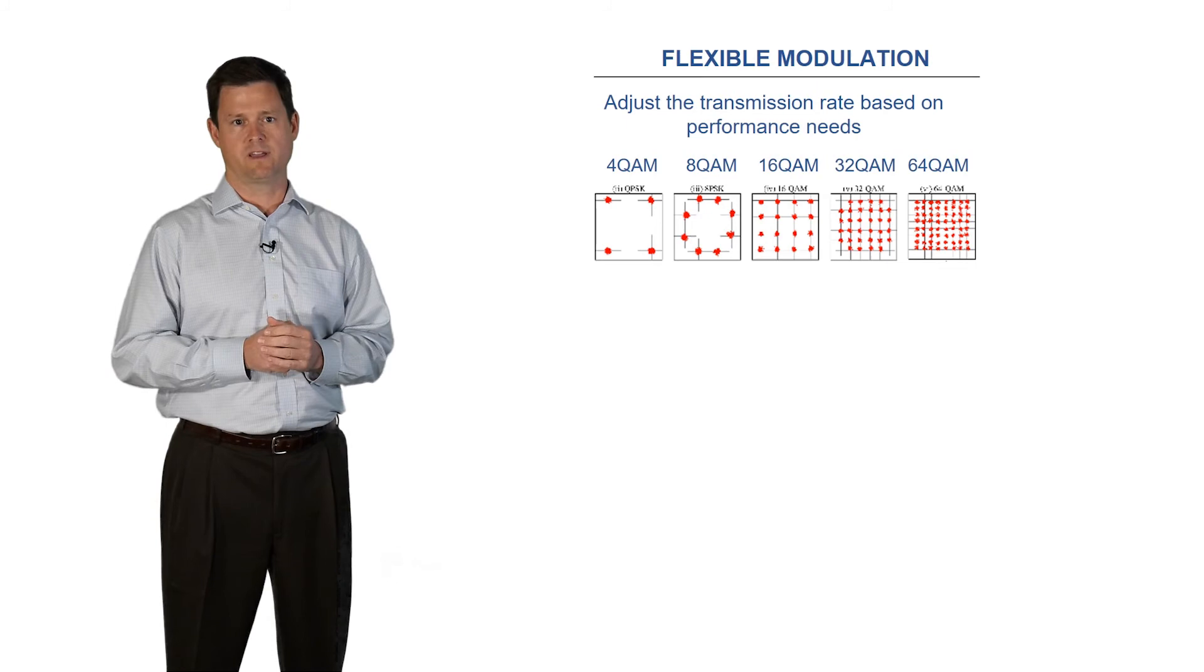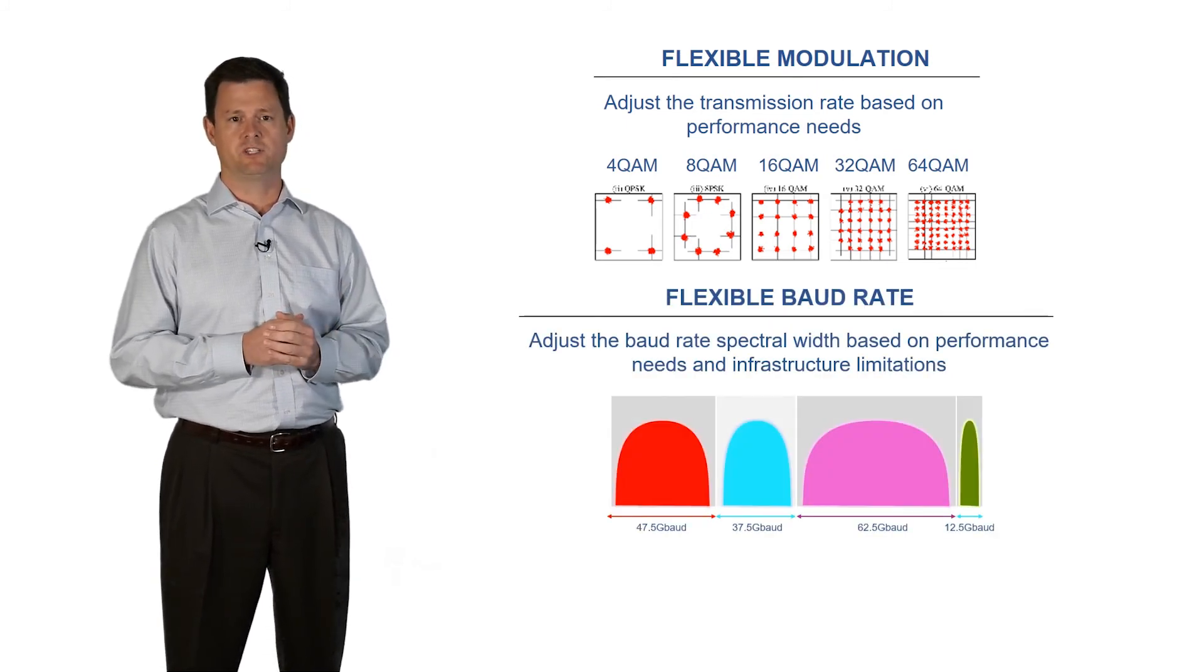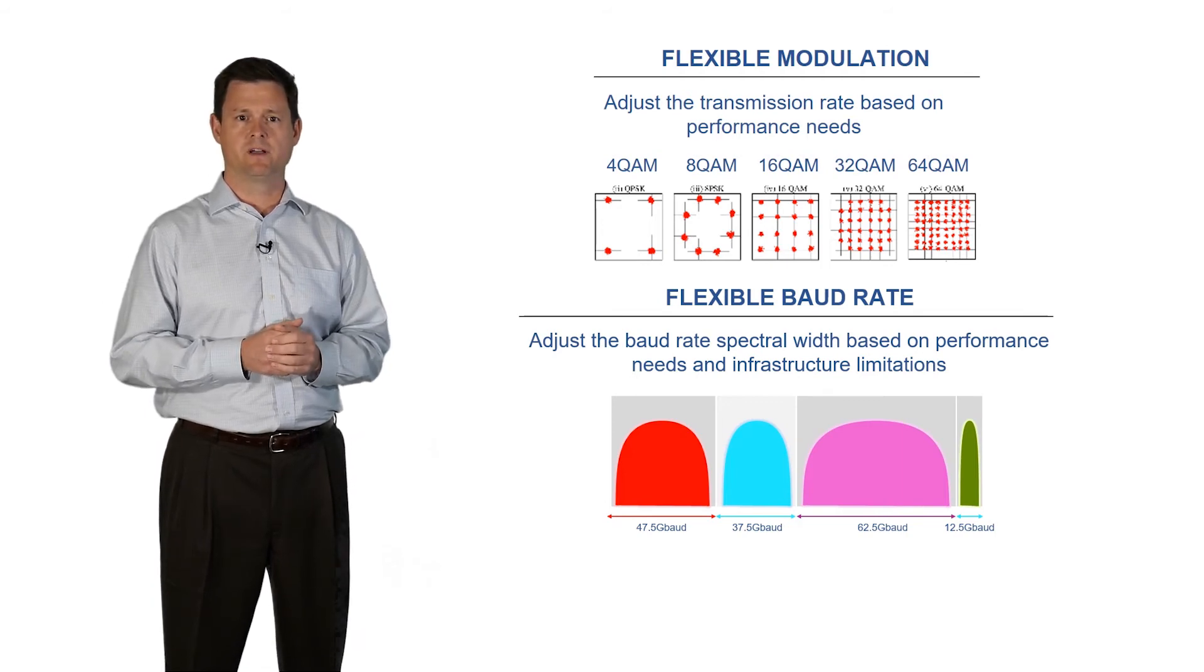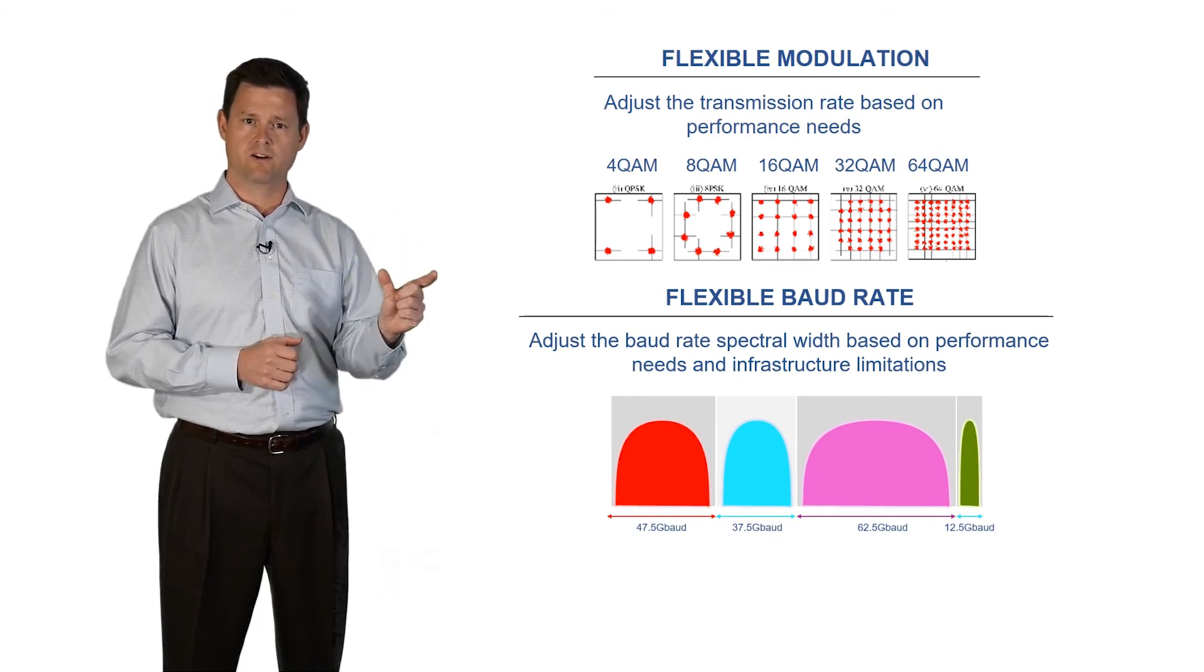Another way to increase the bandwidth of the wavelength is to increase the speed, or baud rate, of the transmission. Increasing the baud rate has a direct relationship to the throughput of a signal, but as the baud rate gets higher, the transmitted signal will consume a greater amount of spectrum.